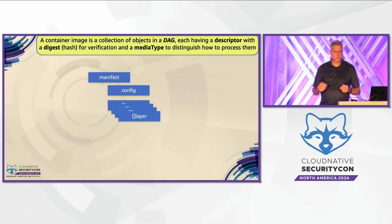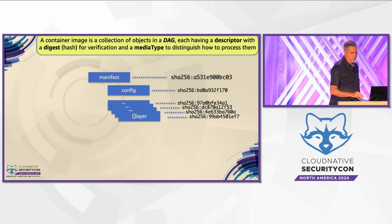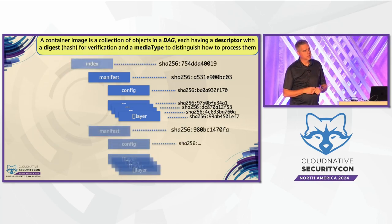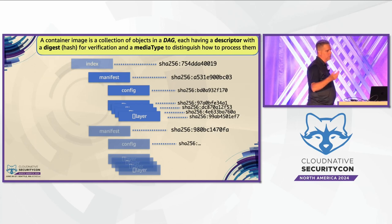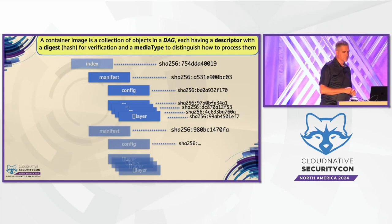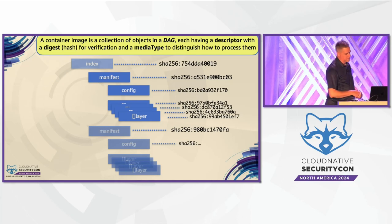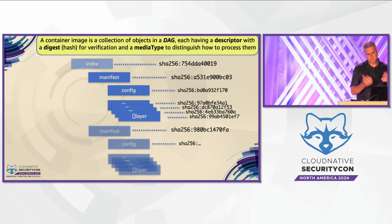Each one of these things will be hashed. The other most common component of the OCI image spec is that you can combine multiple manifests into an index - in the Docker world we called this a manifest list. The main goal when we created the manifest list was to support multi-platform images, so the same reference, the same image name, could support multiple OS and CPU architecture combinations by combining them into an index that had an array of manifests. Each manifest would represent a different architecture. Each one would be summed, and the index itself would have a hash as well. This is roughly the mental model you should have as we talk about all the other properties.